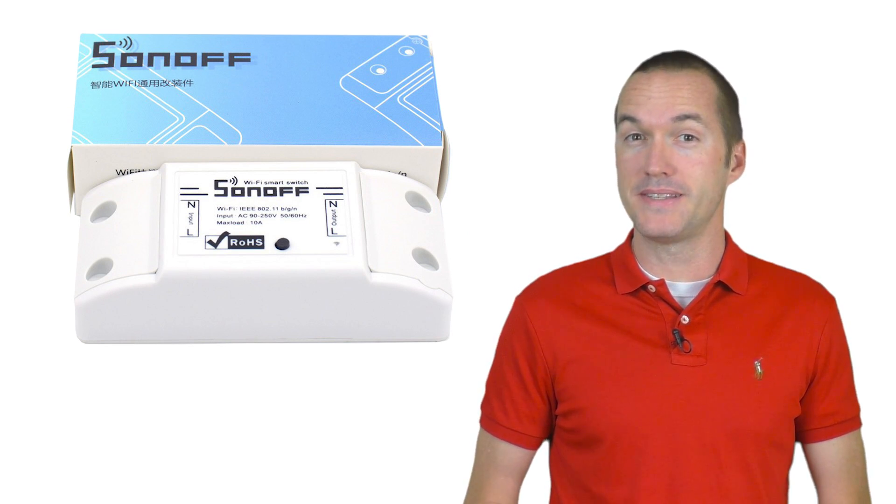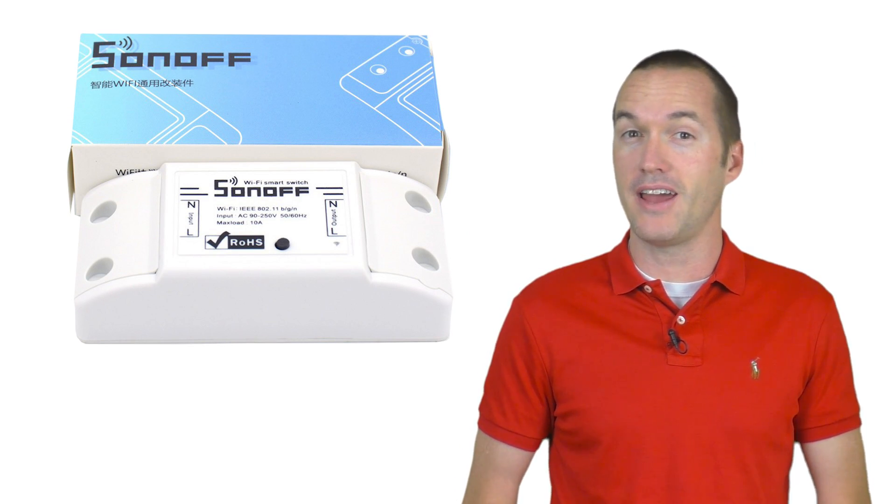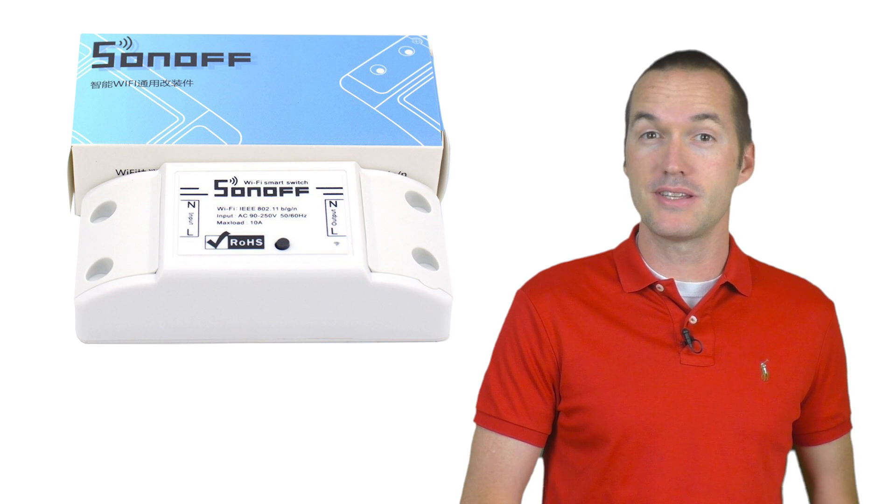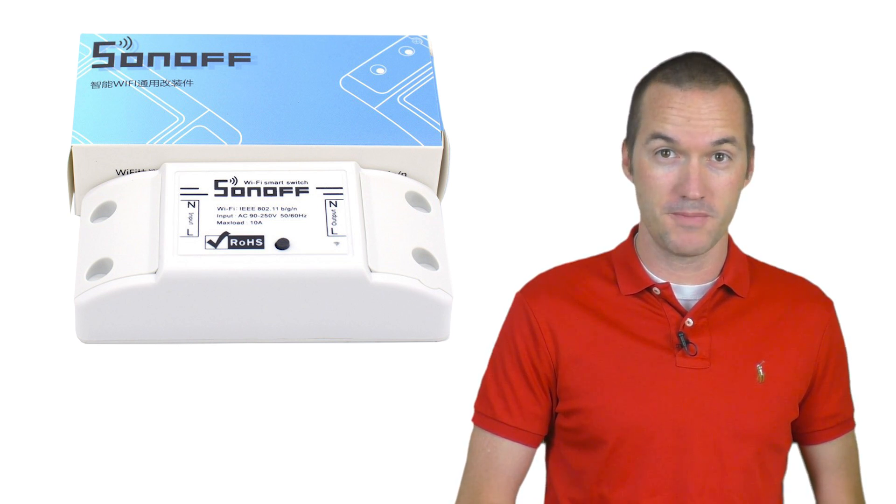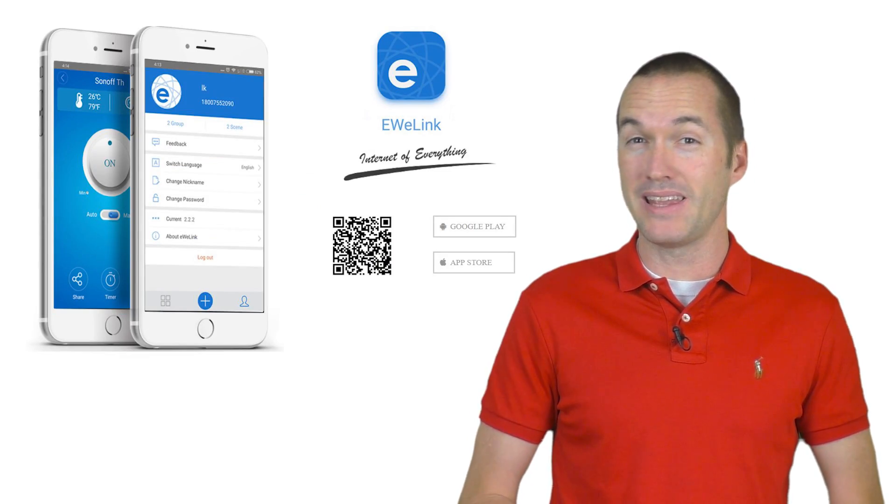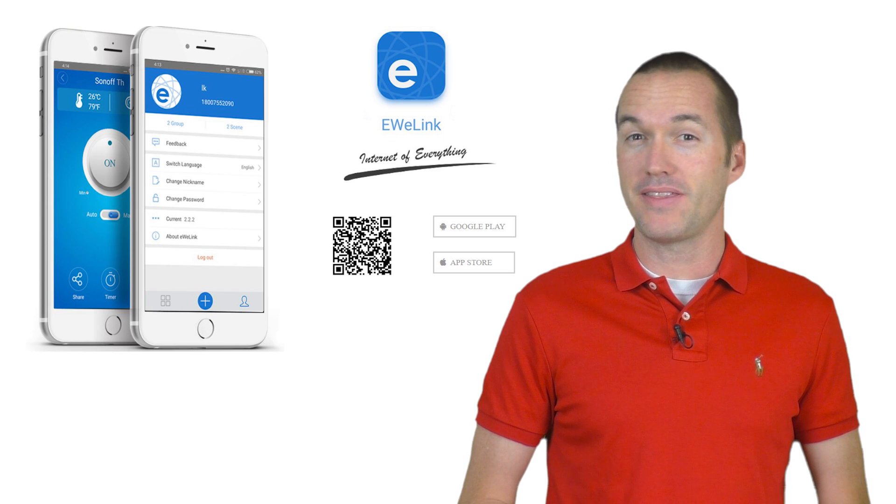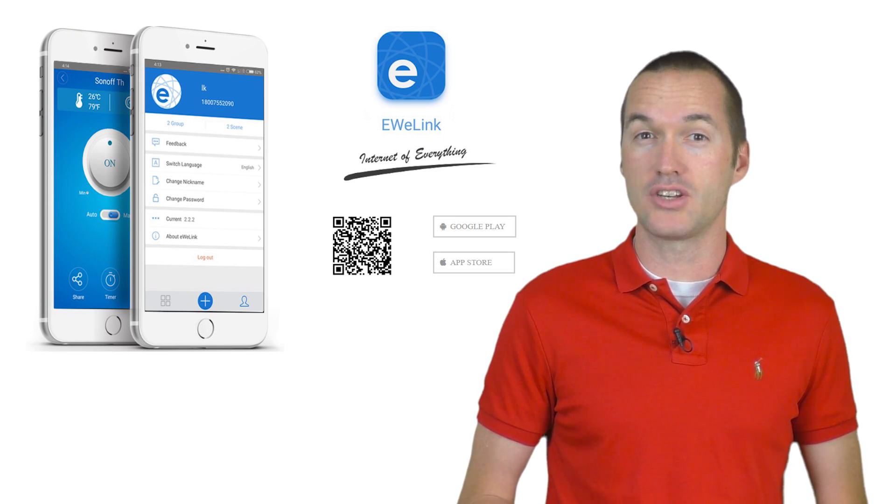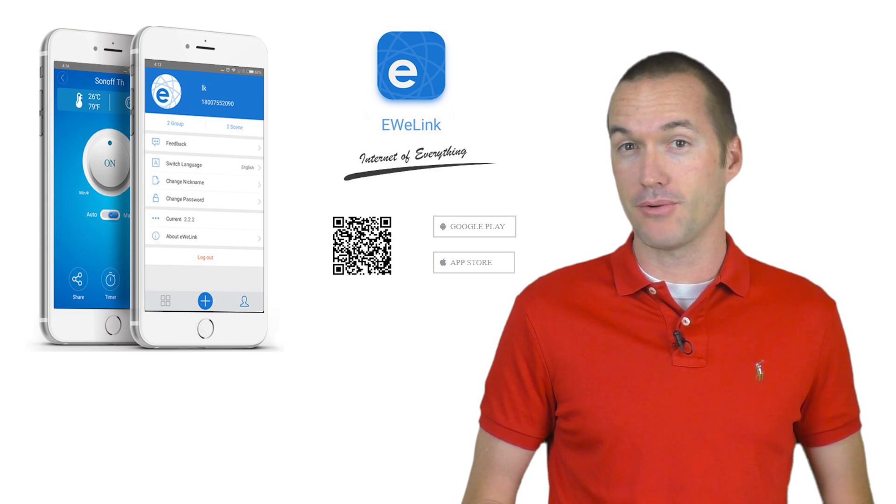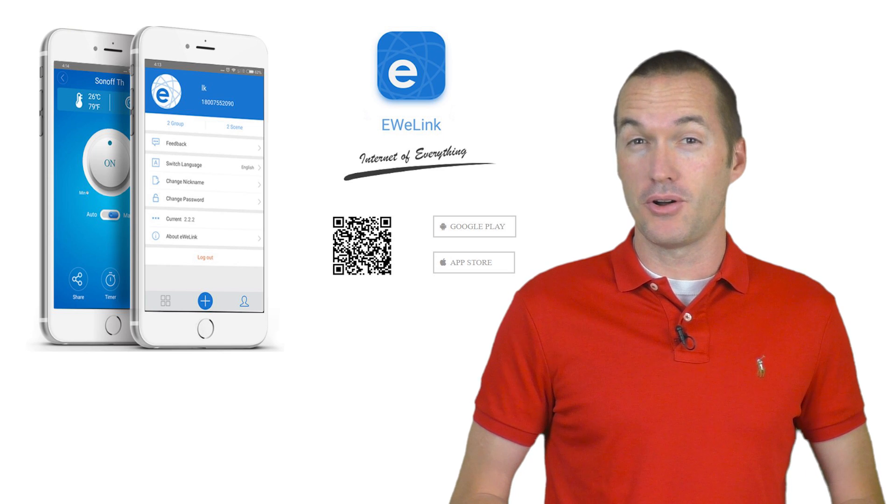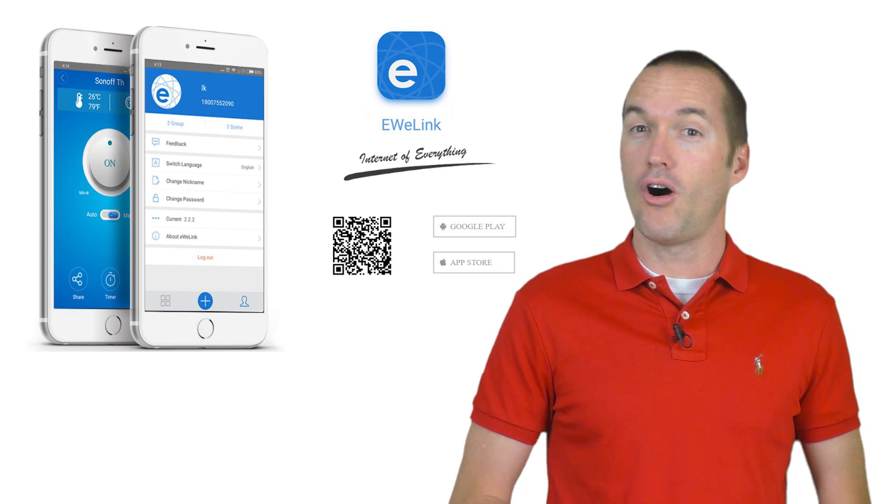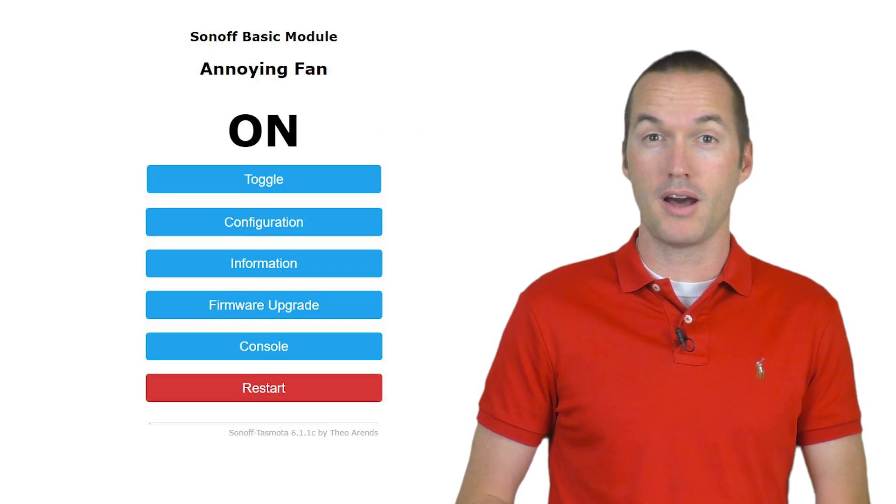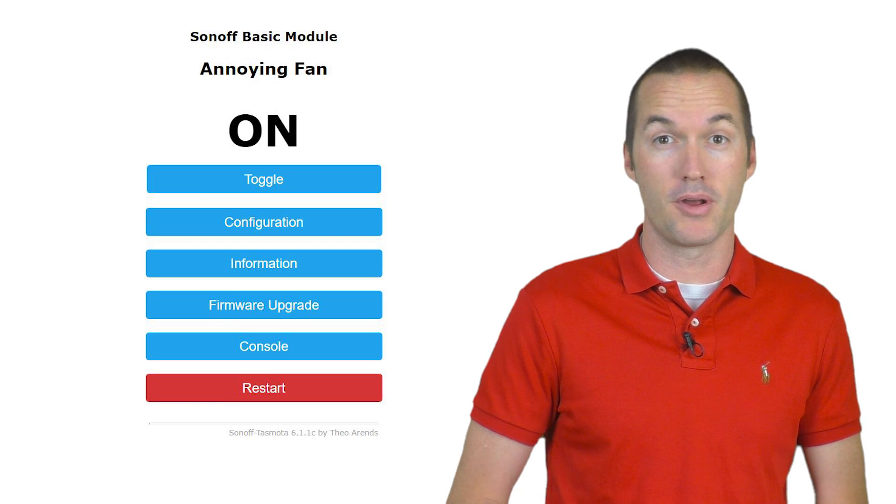As you probably know, a Sonoff Basic is a $5 internet connected relay that powers itself off of your mains voltage. It works natively with the eWeLink app, but I really don't like the idea of using a cloud service to control mains power devices in my house, so I've never even installed that app. Instead, all of my Sonoff devices run a custom firmware called Tasmota.